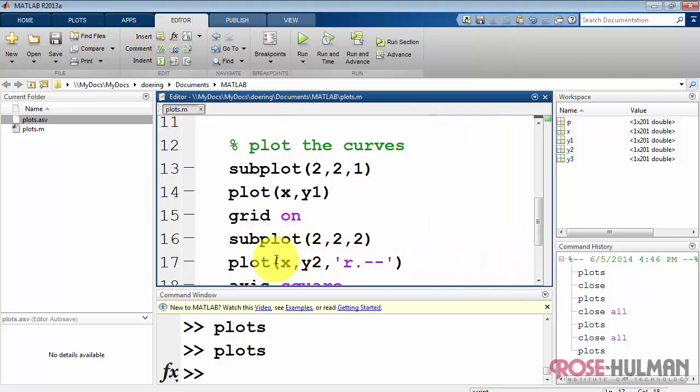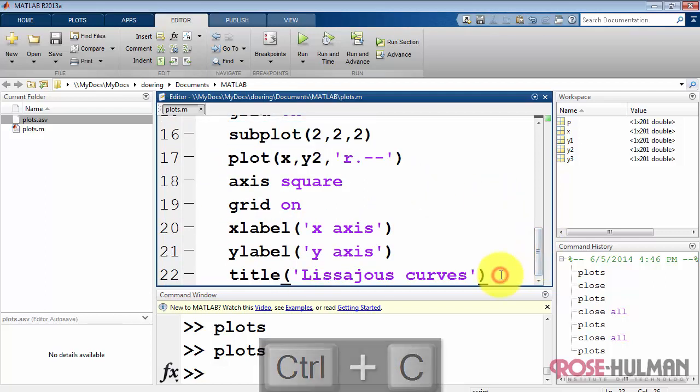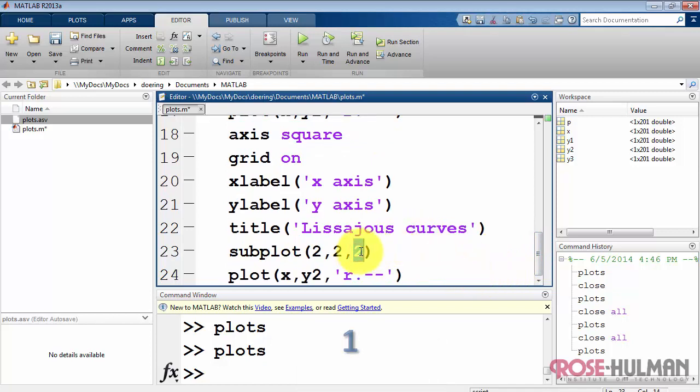And I'll finish off here by directing a new plot to that subplot location number four. I'll use Y3 and then go back to the defaults for color and line style and so on.